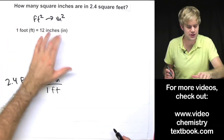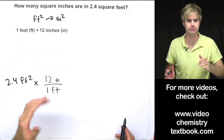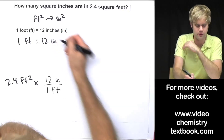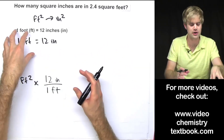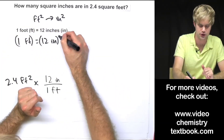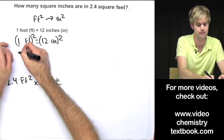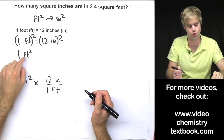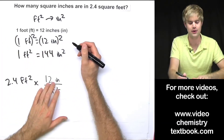We've got to make a relationship that we can then use to build a conversion factor, and this relationship has to have square feet and square inches. Here's how we do it: we're going to start by rewriting 1 foot equals 12 inches, and then we're going to square both sides. We'll put both sides in parentheses squared. Distributing the exponent gives us 1 squared equals 1, and the squared also goes to the feet, so we've got feet squared. So now we have 1 square foot equals 12 squared, which is 144 square inches.